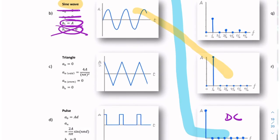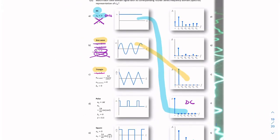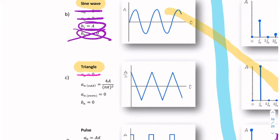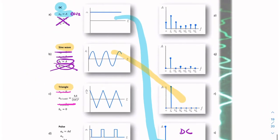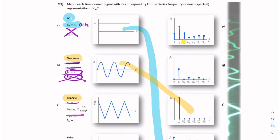Let's look at the next waveform — it's a triangular waveform. The first thing we're told is that it doesn't have a DC value, and a_n equals zero. So we eliminate any spectrum that has a DC value. That leaves either this or this. We also know that the even harmonics are zero: for even values of f_n, we have zero, so the 2nd, 4th, and 6th harmonics should be zero. Looking at one candidate, the 2nd, 4th, and 6th are not zero, so that eliminates it.